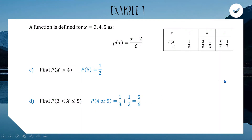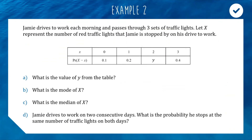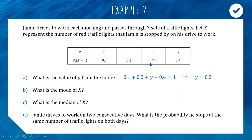Example two involves a table showing the number of traffic lights Jamie stops at on the way to work. There are three traffic lights, so outcomes are zero, one, two, or three red lights. Part a asks for the value of y. Since the probabilities must sum to one: 0.1 plus 0.2 plus y plus 0.4 equals one, so y equals 0.3. There is a 30% chance Jamie is stopped by two red lights.